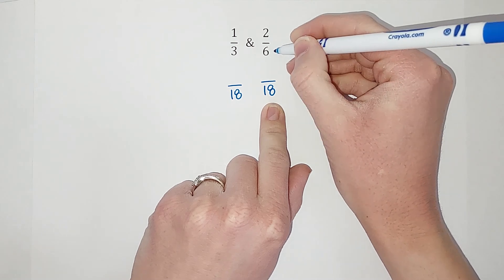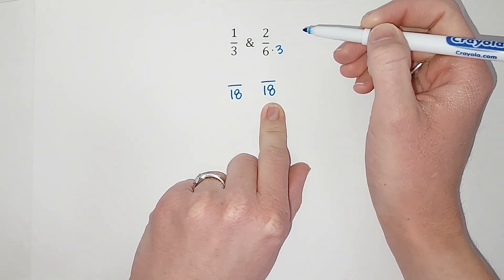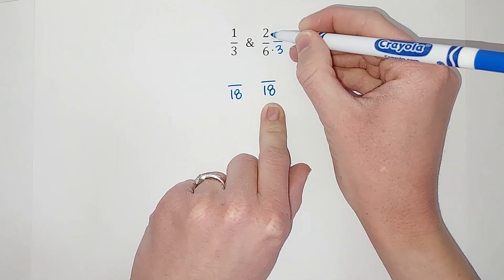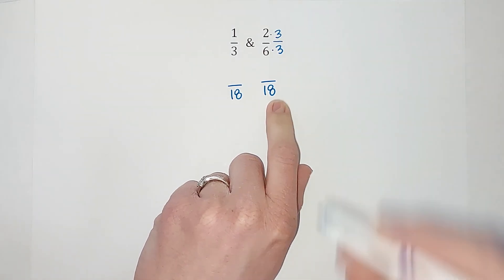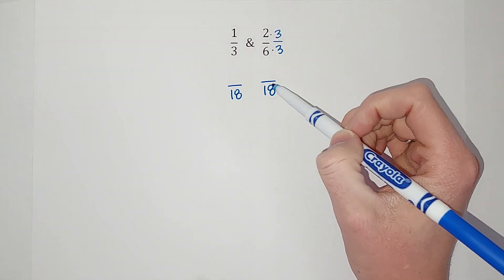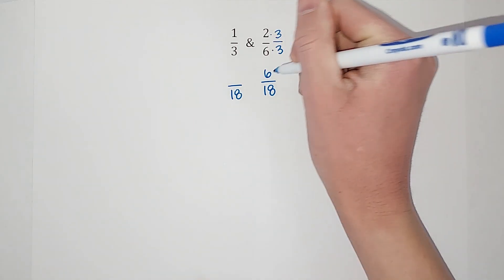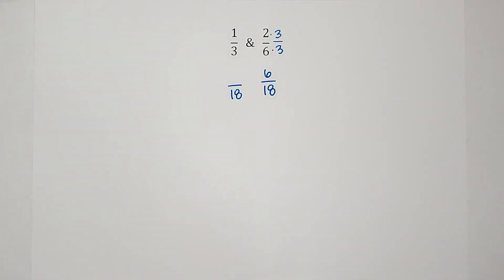In order to get six to be 18, I need to multiply it by three. But I can't just multiply by three, I need to multiply by three over three, because three over three is just one. So I'm really multiplying by one. I'm changing what the fraction looks like, but I'm not changing its actual value. So that six times three gives me the 18, two times three gives me six.